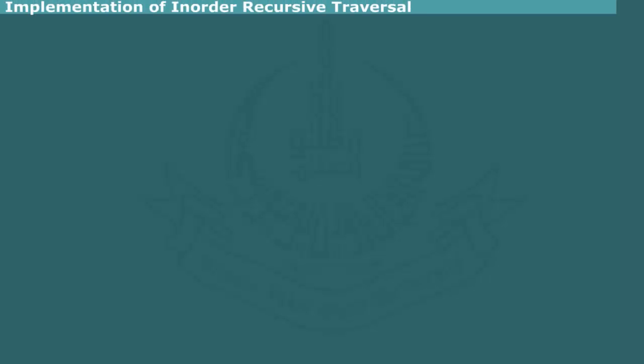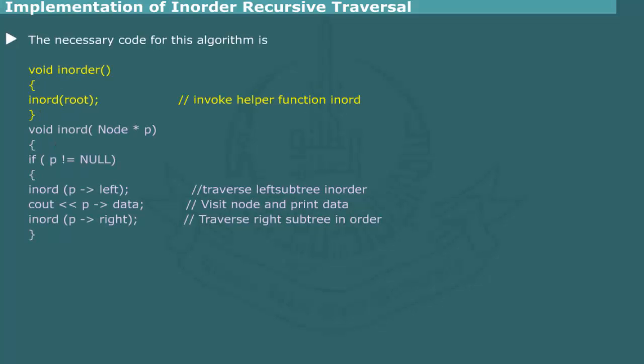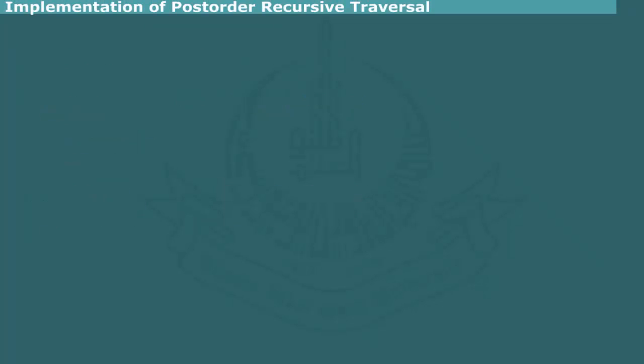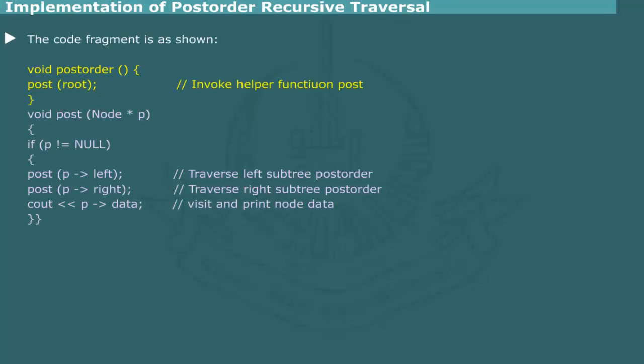Implementation of in-order recursive traversal. In in-order traversal, first the left subtree is traversed in order, then the root is visited, and finally the right subtree is traversed in order. The necessary code invokes the helper function, traverses the left subtree in order, visits the node and prints data, then traverses the right subtree in order. In post-order traversal, first the left subtree is traversed post-order, then the right subtree is traversed post-order, and finally the root node is visited. The code fragment to implement this algorithm invokes the helper function, traverses the left subtree, then traverses the right subtree, and passes the operation.